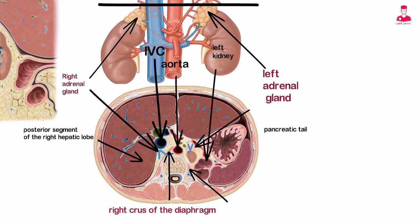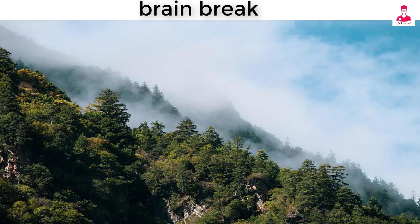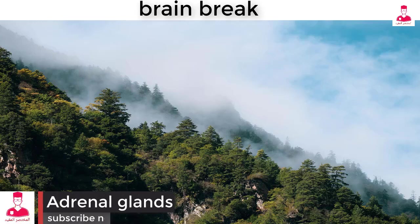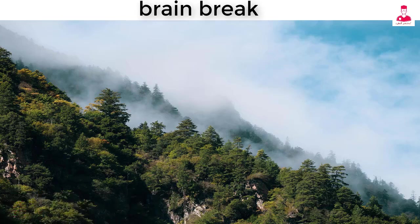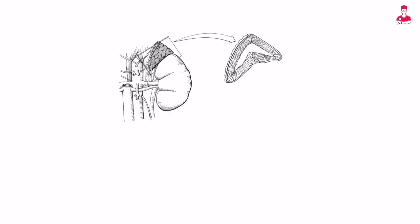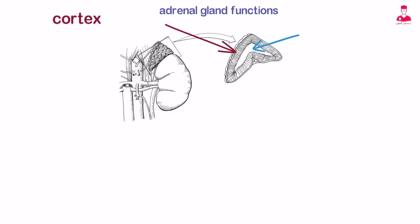The posterior surfaces of both the right and left glands border the crura of the diaphragm. Each adrenal gland has an outer cortex and an inner medulla, which function independently.